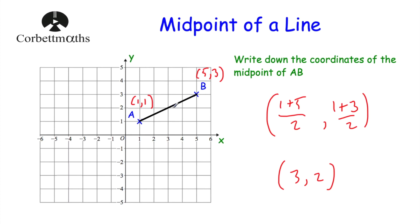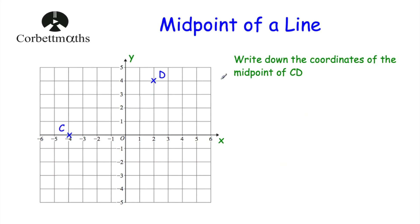So you could use either approach — inspection if it's drawn nicely on the grid, or adding the coordinates together and dividing by 2. Let's have a look at our next question.